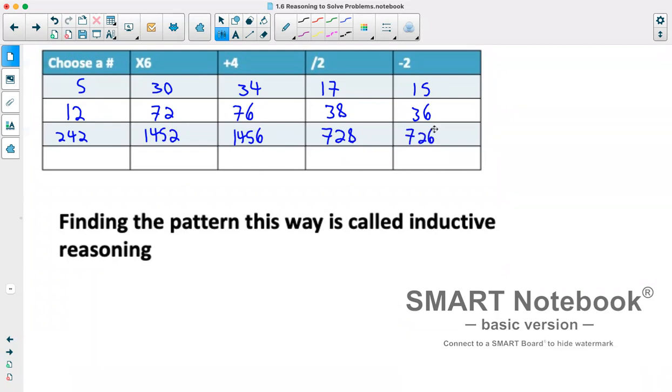A pattern I've seen so far emerging is essentially every number that we end up with is exactly 3 times our number. 5 times 3 is 15, 12 times 3 is 36, 242 times 3 is 726. Let's try a negative number, say negative 4 times 6 is negative 24. Plus 4 brings us negative 20. Divide by 2 gives us negative 10. Subtract 2 is negative 12. That is 3 times negative 4.